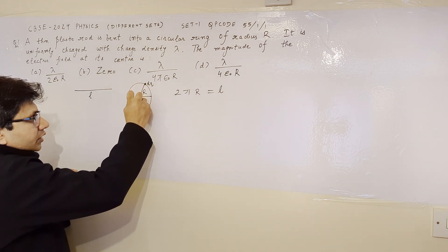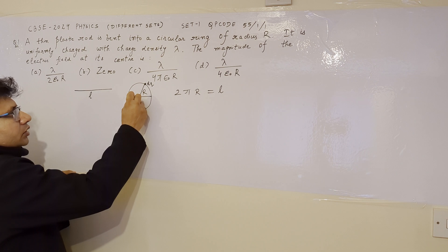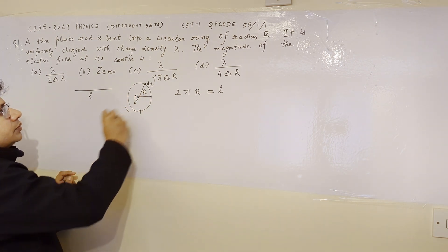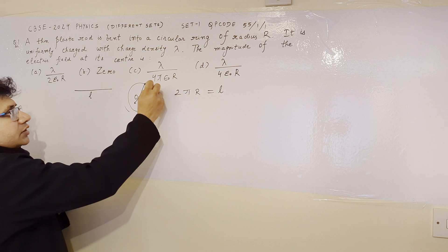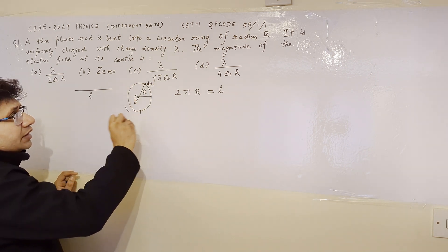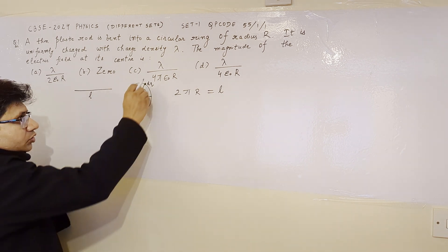and suppose we want to calculate the electric field at the center O, then the electric field is away from this particular charge if it is assumed to be a positive charge. And if it is assumed to be a negative charge, then it is towards the particular small segment.